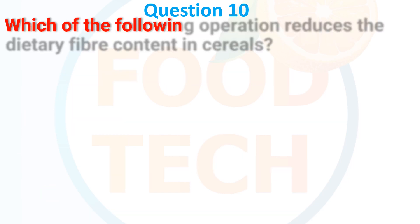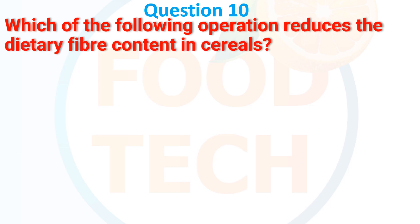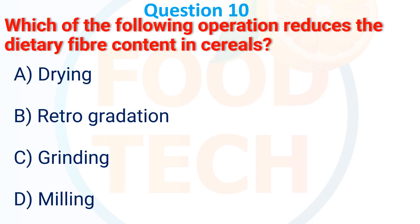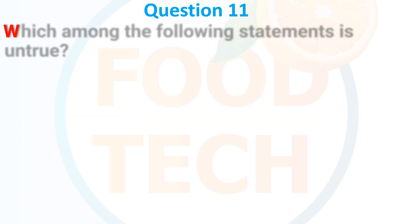Question 10. Which of the following operations reduce the dietary fiber content in cereal? A. Drying. B. Retrogradation. C. Grinding. D. Milling. The correct answer is D: milling. Question 11. Which among the following statements is untrue?